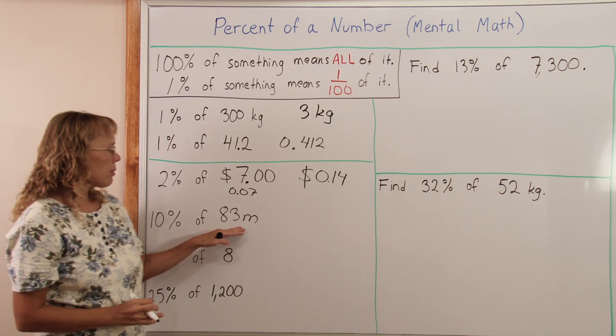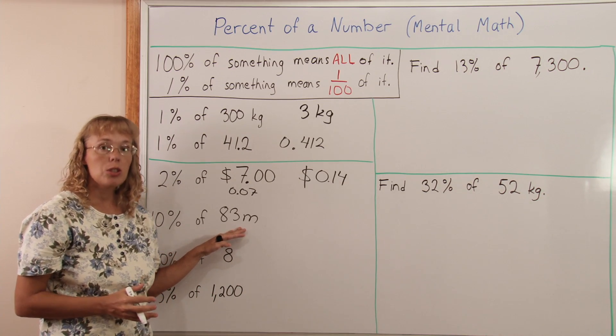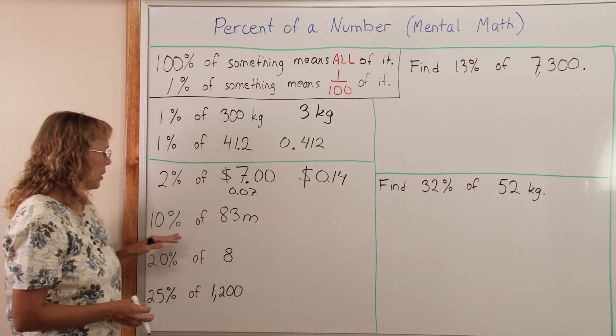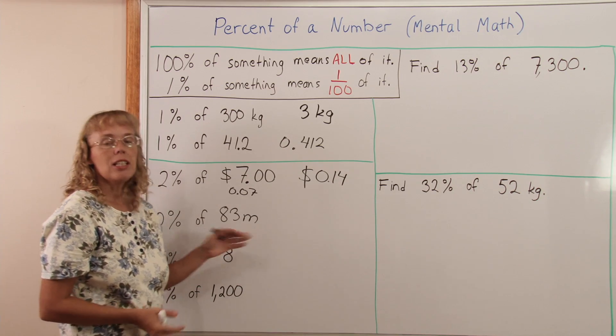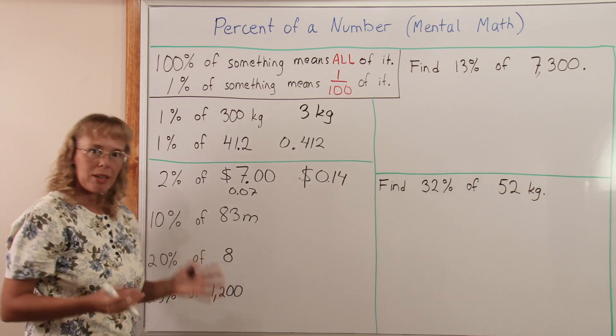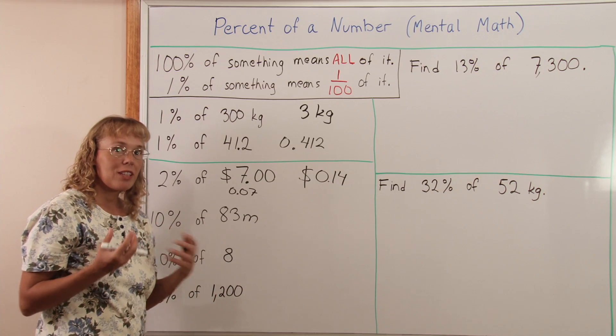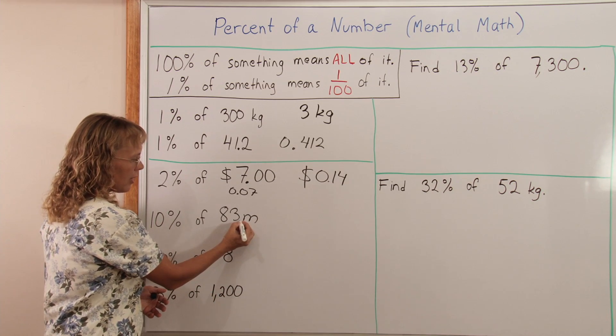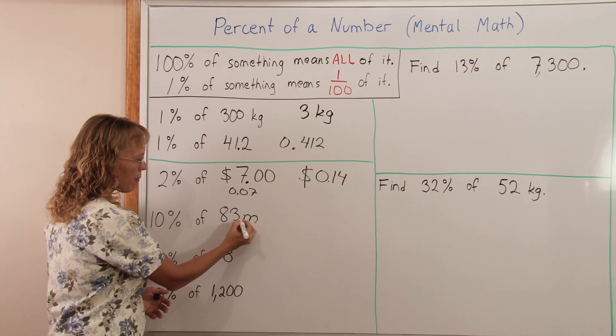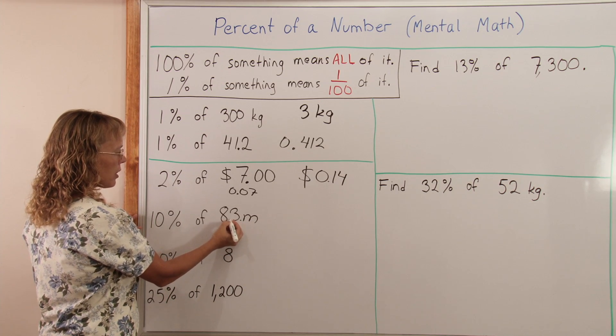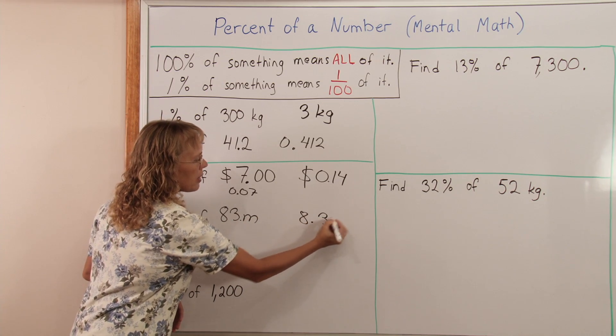Now 10% of something. There's a shortcut for this too: you can divide by 10. 10% of 83 meters, divide by 10. To divide by 10, again we are going to move the decimal point, which is here. 83.0. So the decimal point moves this way to 8.3 meters.